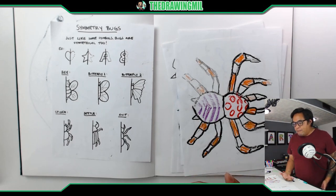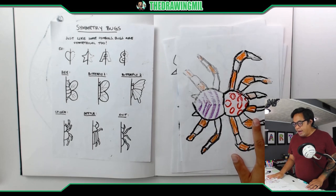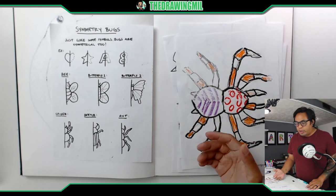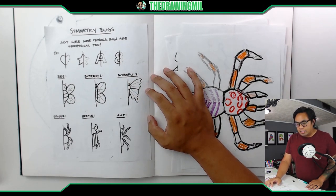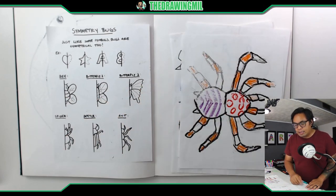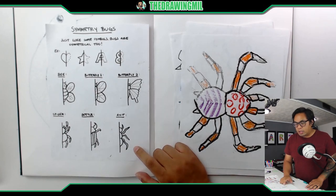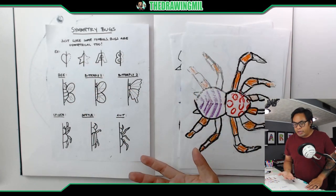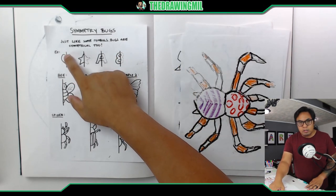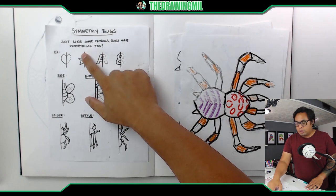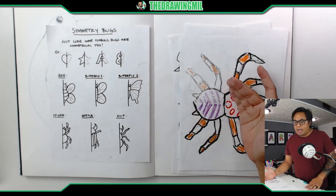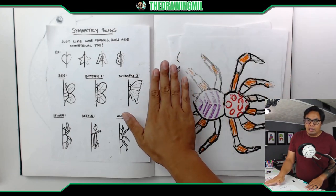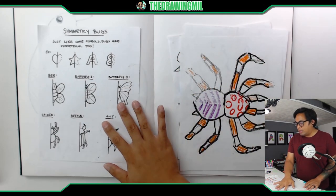Let's look at a couple examples I have over here. These are some sheets I've used in the past, and this handout is what I normally pass out to you guys so you can have a little reference. Here are some examples of half bugs that symmetry works with — a bee, two different types of butterflies, a spider, a beetle, an ant. There are also examples where symmetry works with shapes, letters, and numbers: a heart, a star, the letter A, and the number eight. Basically, if you draw a bee on one side and copy the exact same thing opposite that line, it'll turn out to be a whole bee.